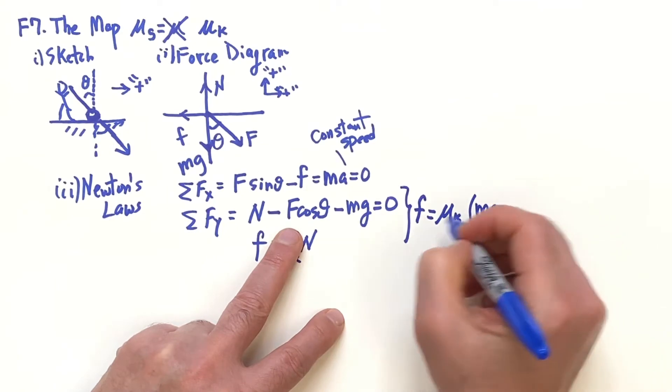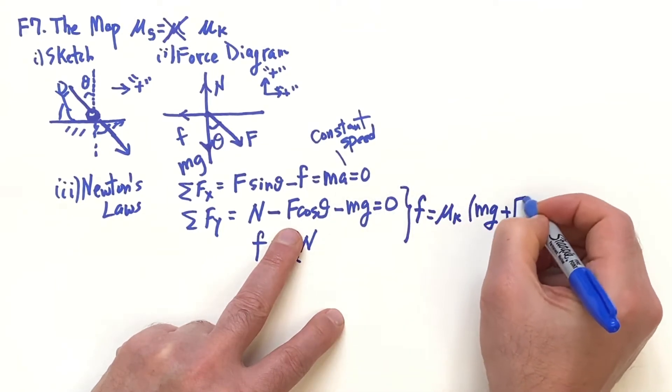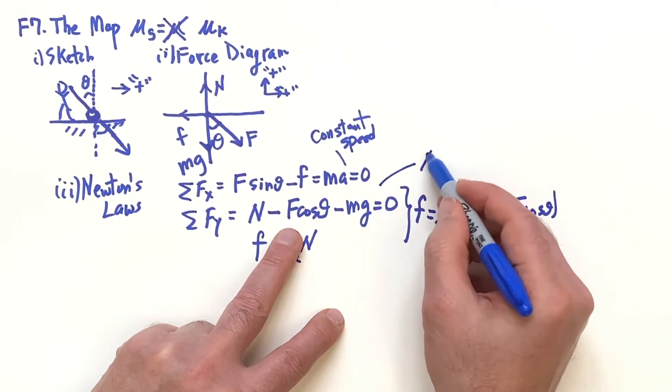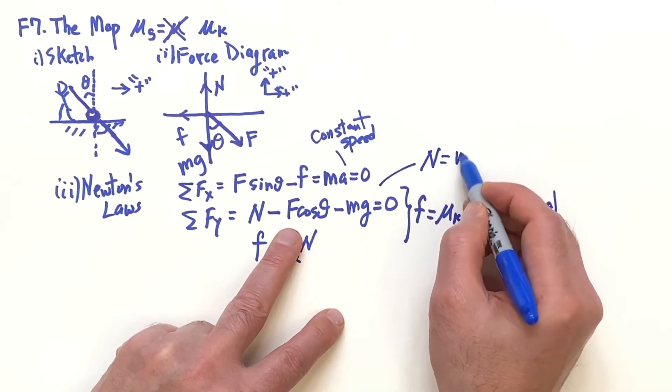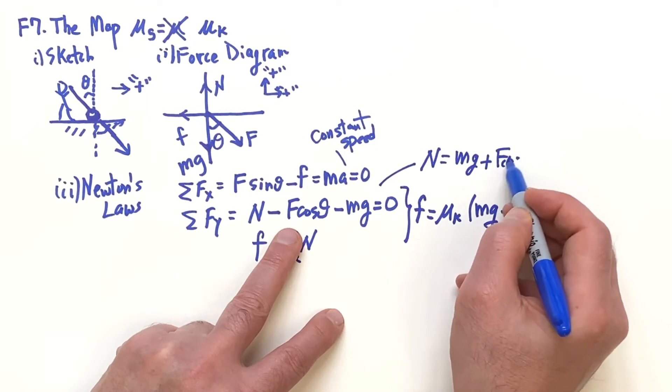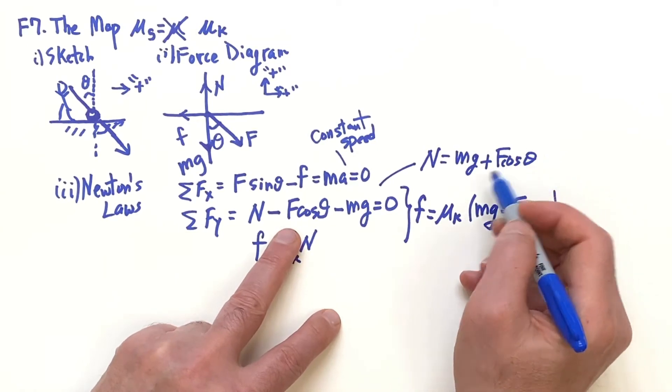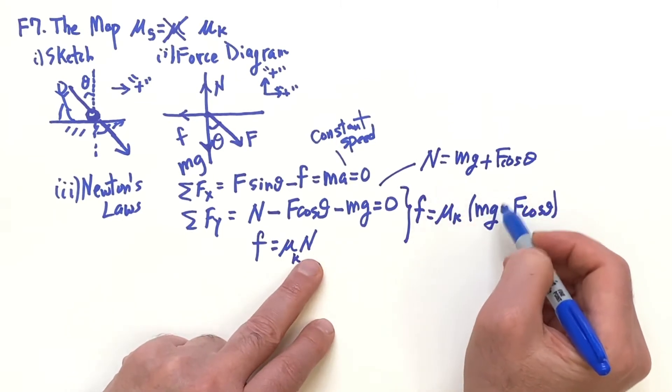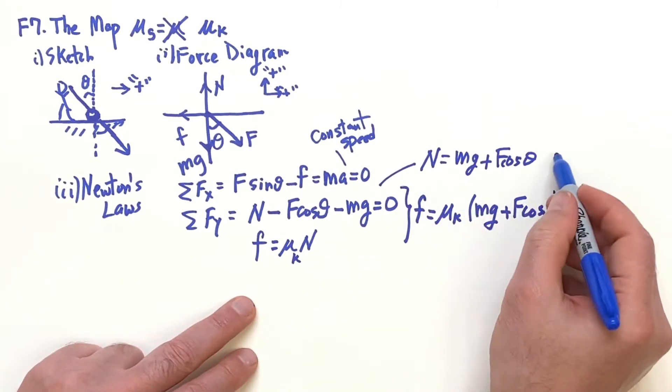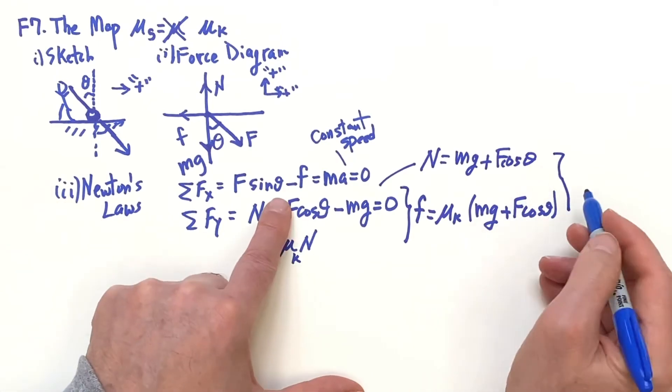N is going to be - bring the mg on the other side of the equation and the F cos θ - that's what N is: N is mg plus F cos θ. And then when I put that in for N, the μ_k is out there.